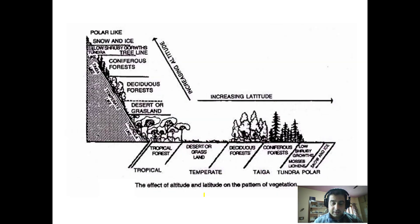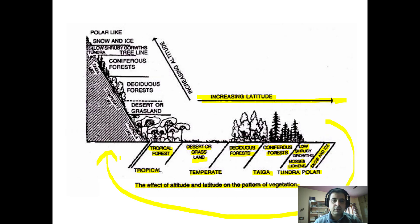Now to further understand the effect of altitude and latitude on the pattern of vegetation: as latitude increases, vegetation changes from tropical, to temperate forest, to taiga, to tundra, and to polar. Forests change from tropical forest to desert or grassland, then to deciduous forest, then coniferous forest, then low shrubs, mosses, lichens, and ultimately snow and ice.